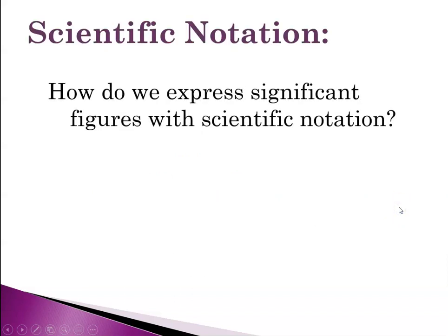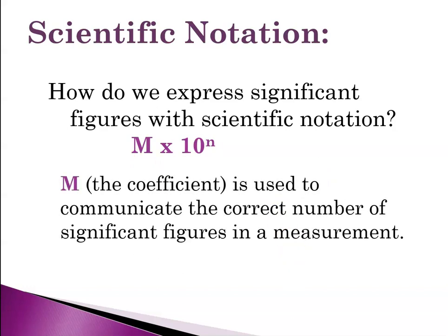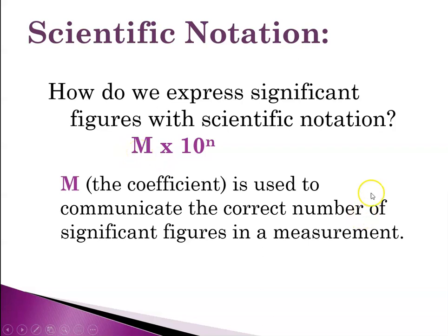So how do we use significant figures when we're doing scientific notation? So we've talked in the previous video about sig figs being very important when you report anything in scientific measurements. And so what do you do about sig figs? So it turns out that m, the coefficient, is what we use to communicate the correct number of sig figs in the measurement. So the exponential part is not part of the sig figs. So if you need one sig fig, or two sig figs, or three sig figs, you communicate that using the coefficient part, the m.